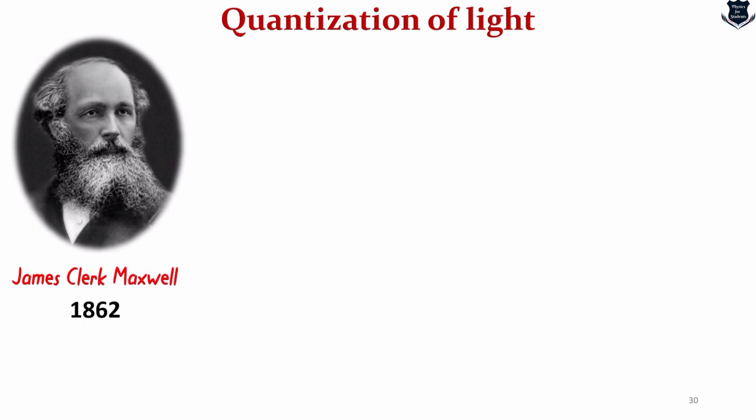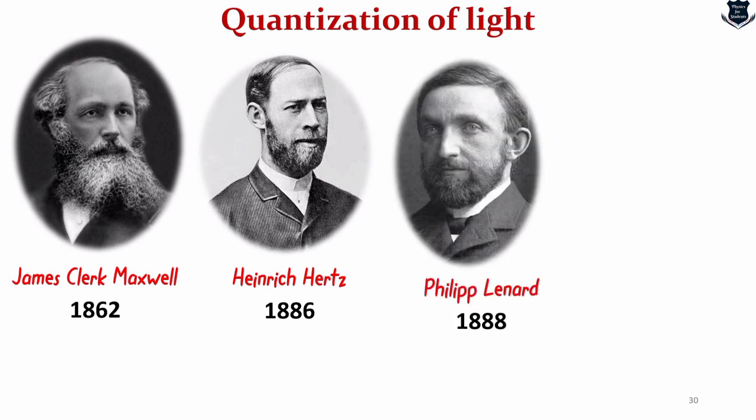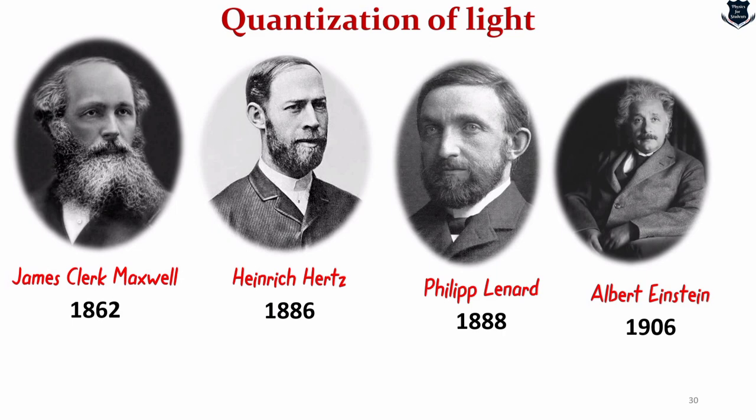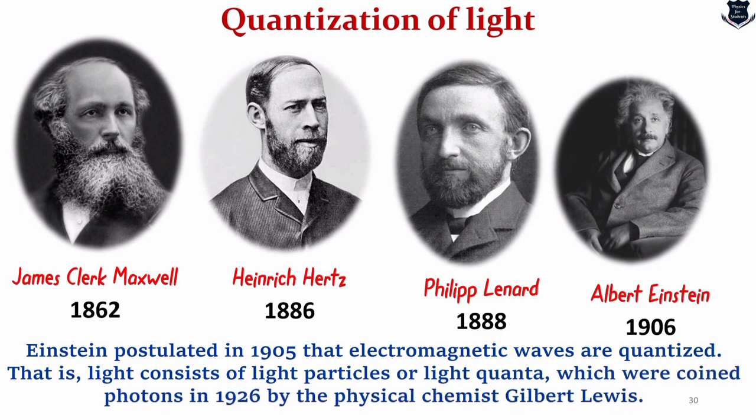Now that we have seen how Einstein contributed to quantization, it's time to see who were the other contributors of Einstein's light particle hypothesis. The first is that we know James Clerk Maxwell conjectured in 1862 that light is an electromagnetic wave. In 1886, Heinrich Hertz established the existence of electromagnetic waves by a famous experiment carried out at Kiel University in Germany. When electromagnetic radiation is incident on the surface of a metal, the effect was first observed by Heinrich Hertz in 1887, and 15 years later, Philipp Lenard observed that the maximum kinetic energy of the electron does not depend on the intensity of light. In order to explain the photoelectric effect, Einstein postulated in 1905 that electromagnetic waves are quantized. That is, light consists of light particles or light quanta which were coined as photons in 1926 by the physical chemist Gilbert Lewis.